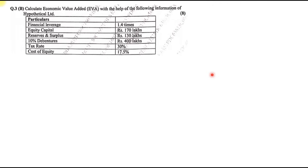Now for Question 3B: calculate Economic Value Added (EVA) using the given information — financial leverage, equity capital, reserve and surplus, debentures, tax rate, and cost of equity. Remember, there are five variations of EVA problems. This particular sum is based on financial leverage, so we use that approach.